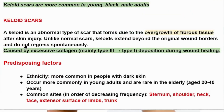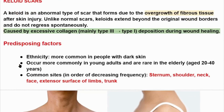A keloid is an abnormal type of scar that forms due to the overgrowth of fibrous tissue after skin injury. Unlike normal scars, keloids extend beyond the original wound borders and do not regress spontaneously. Keloid scar formation is caused by excessive collagen deposition — mainly type 3 transitioning to type 1 — during wound healing.